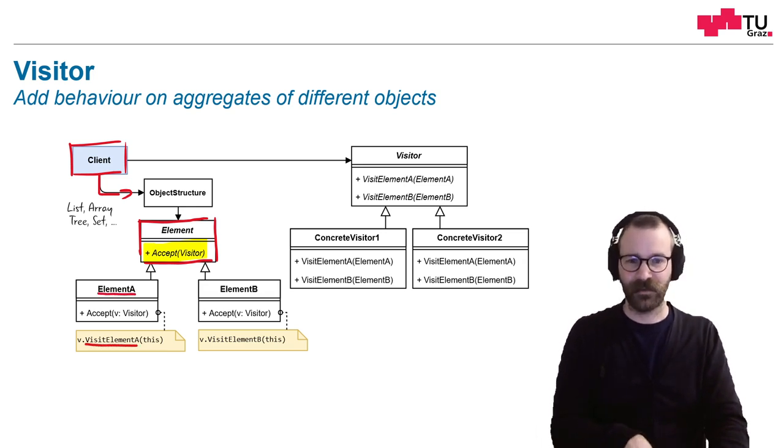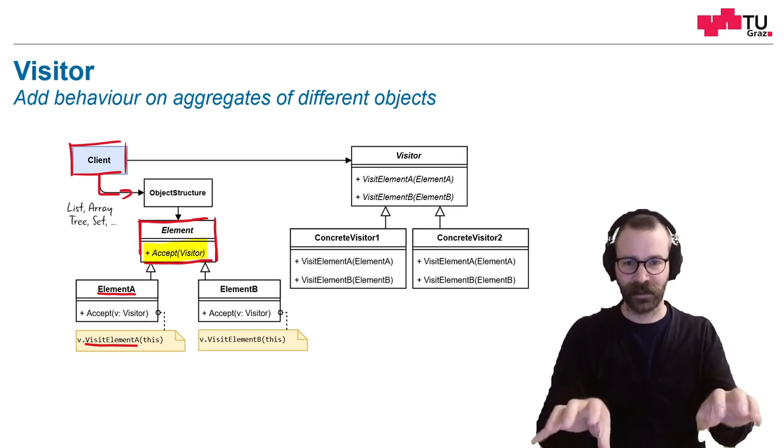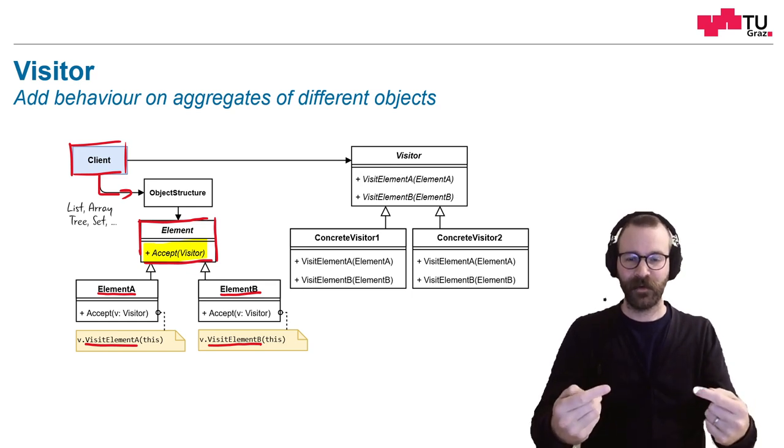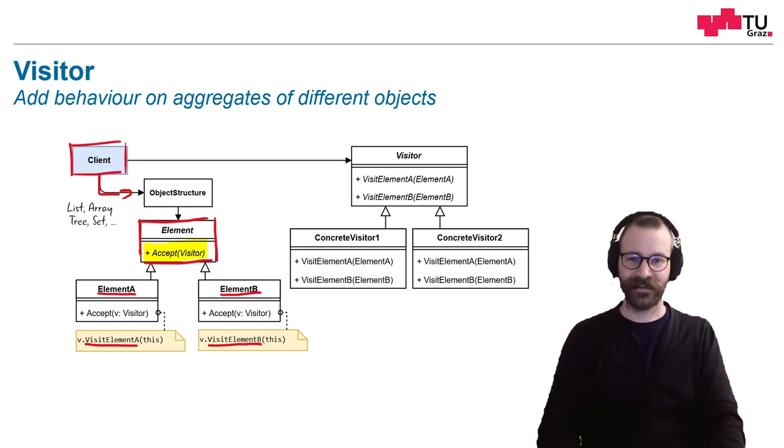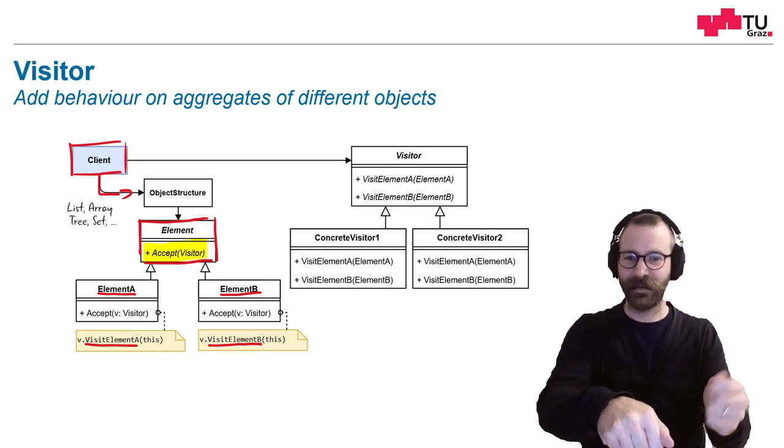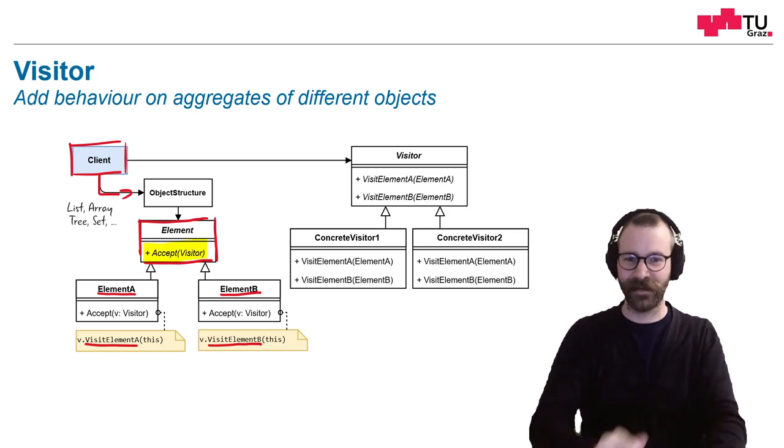For example, we have a concrete implementation A and the implementation B. These are different object types. And implementation A implements the accept method like this by using the visit element A method. And element B uses the visit element B method. And they both provide themselves as parameter, so it's double dispatch. We get an object and call the visit method and supply ourselves as the parameter to this visit method.